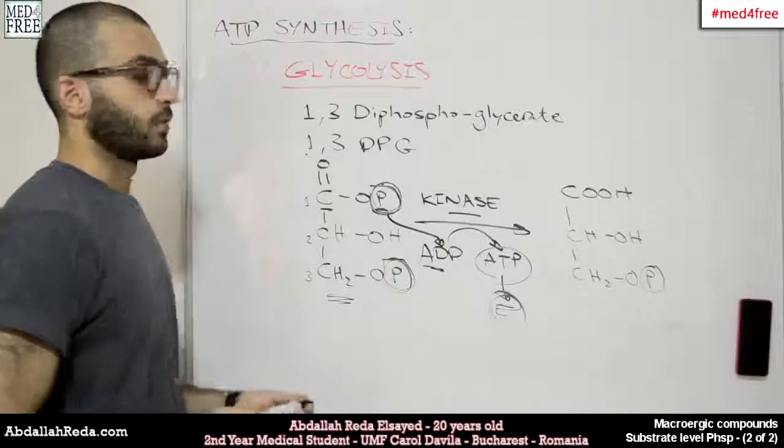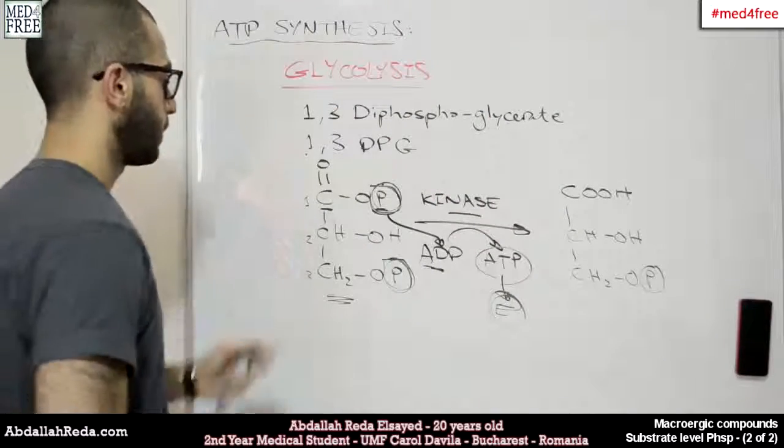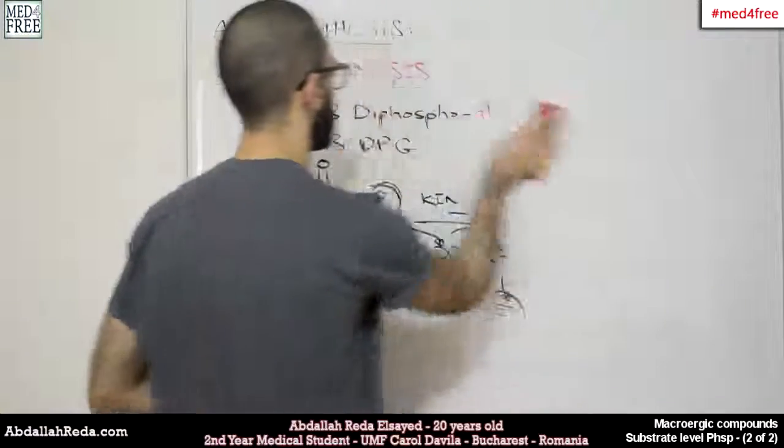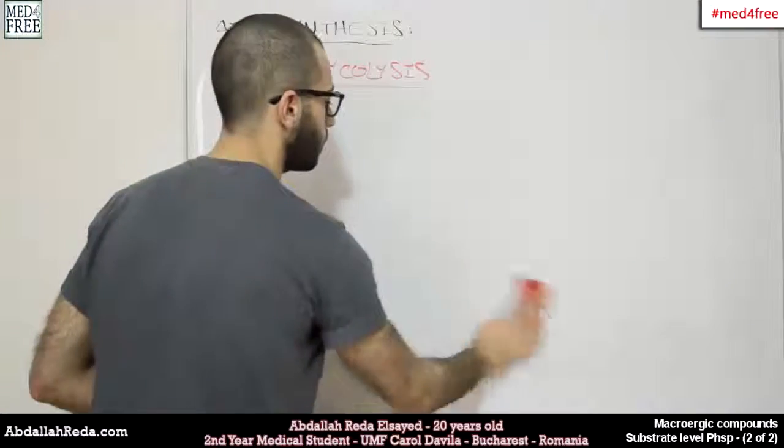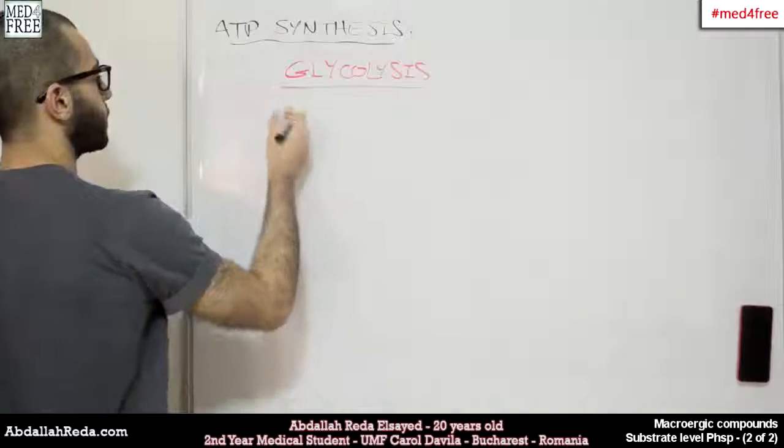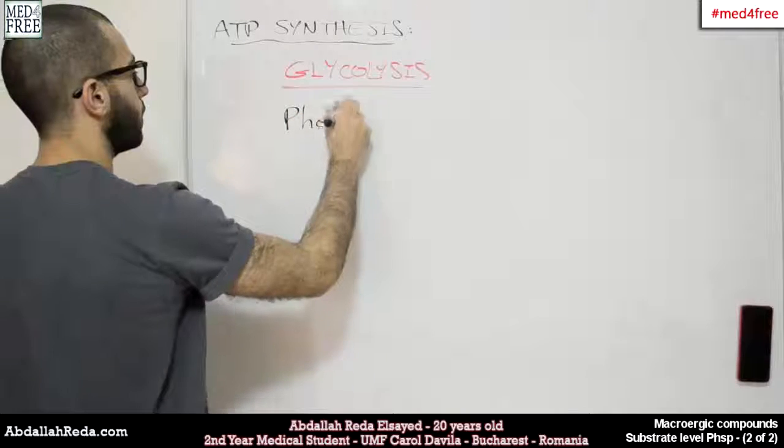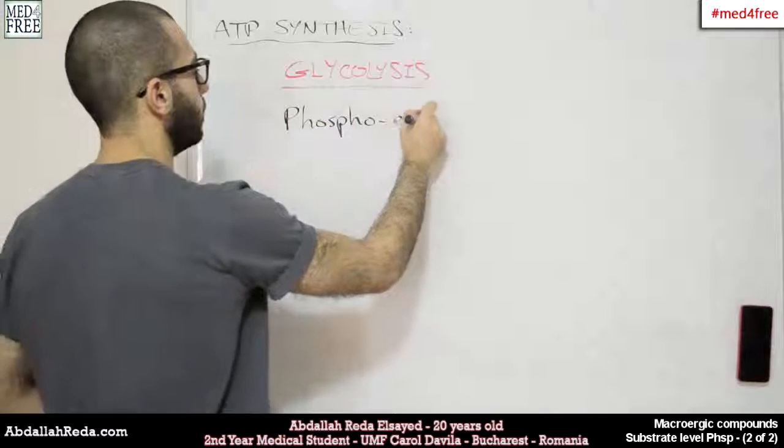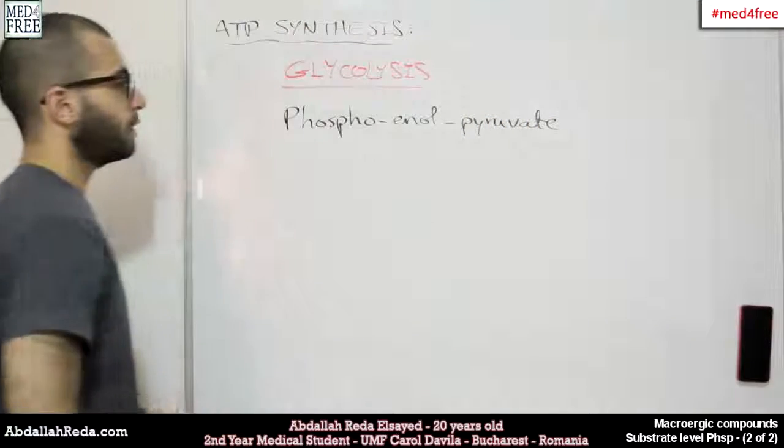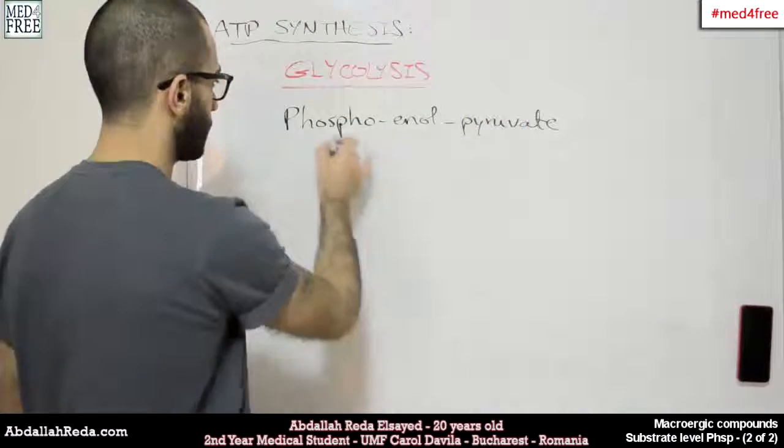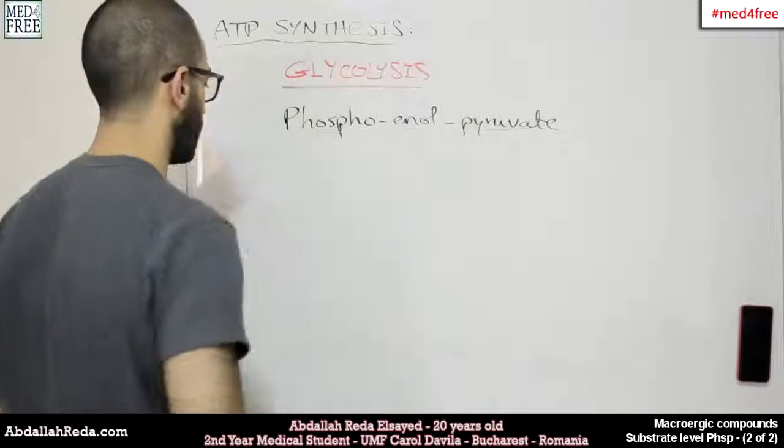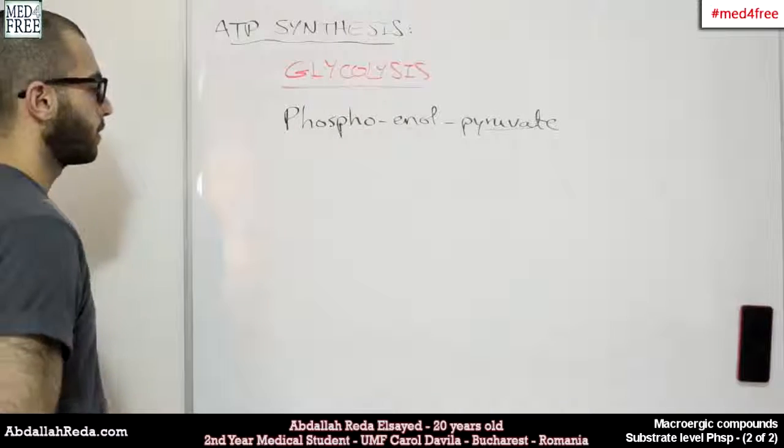This is our first example. The second example, which is still in glycolysis, involves another compound which is called phosphoenolpyruvate. It has three parts, and the reaction actually has three steps. We'll see how it goes.